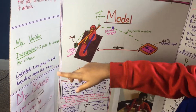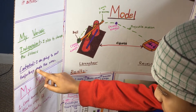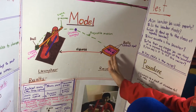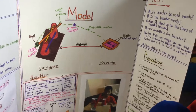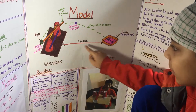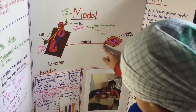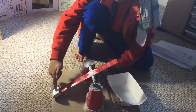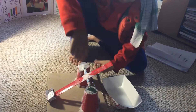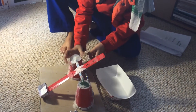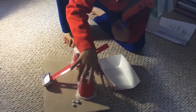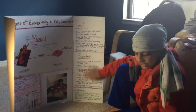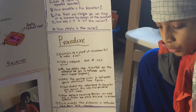My independent variable is I plan to change the distance, and the controlled variable is I keep the trajectory angle the same. This is my ball launcher — the catapult, the ruler, the two pencils, two plastic cups, and the receiver. This is the procedure it took me to build the whole thing.